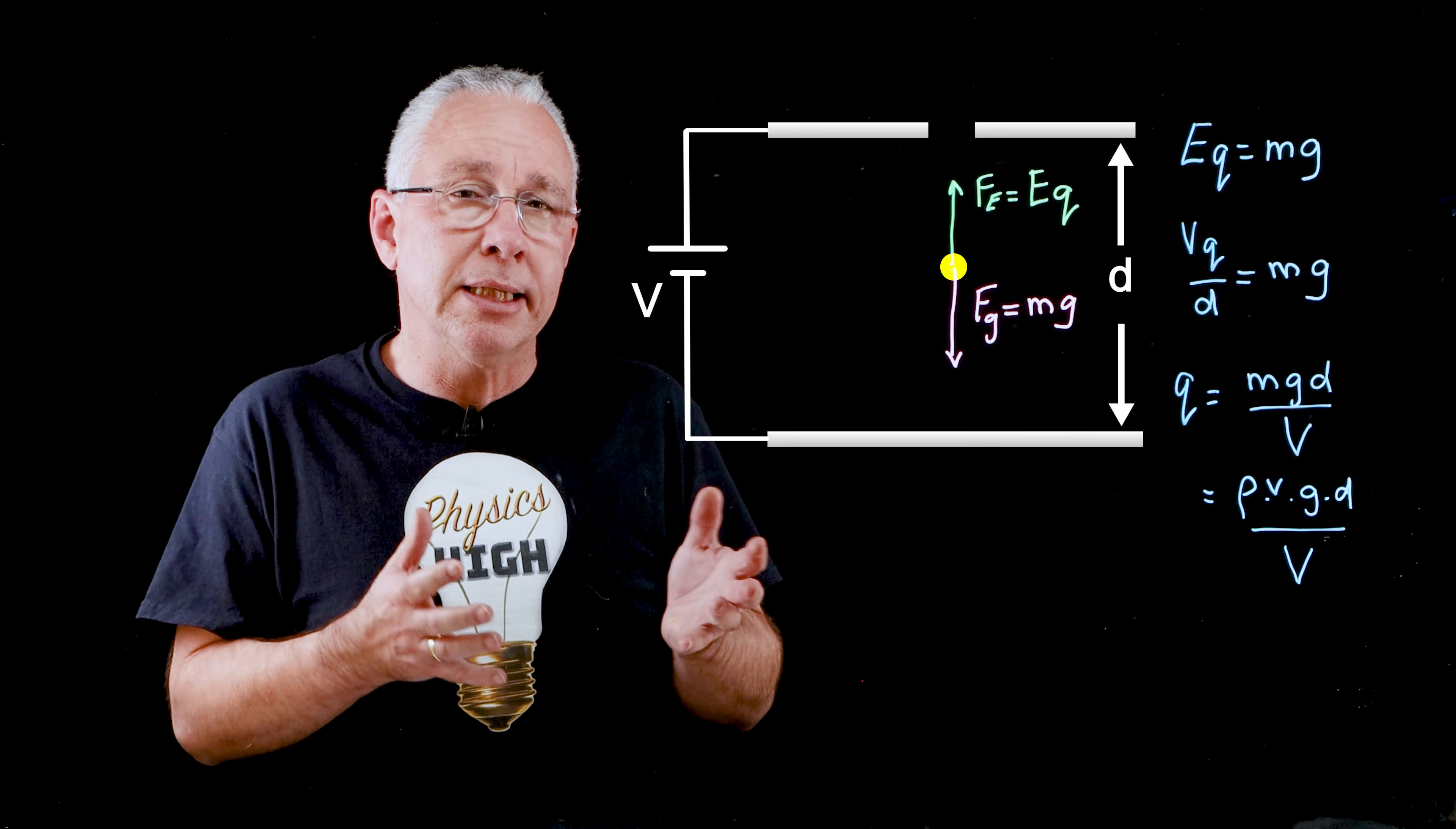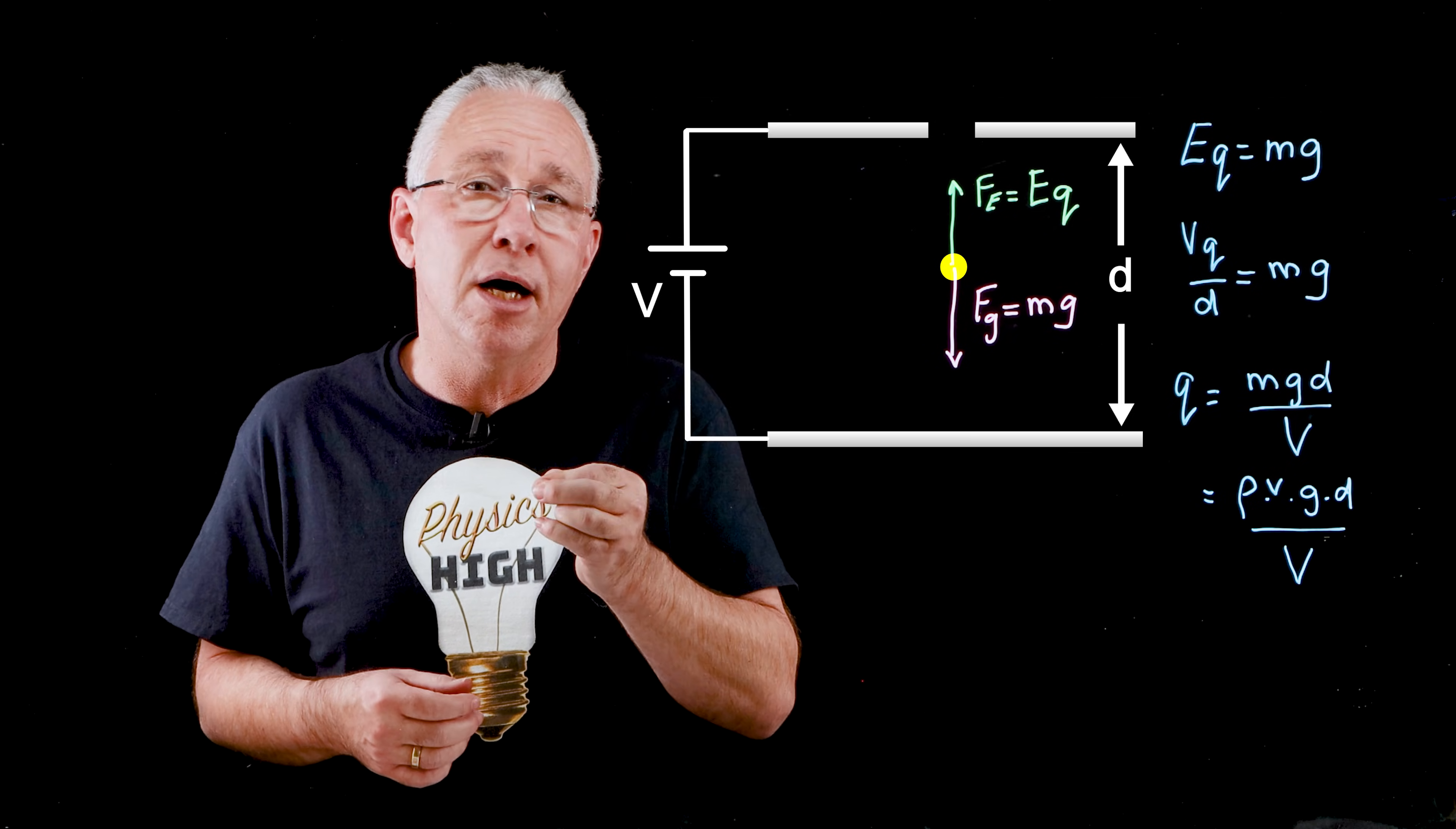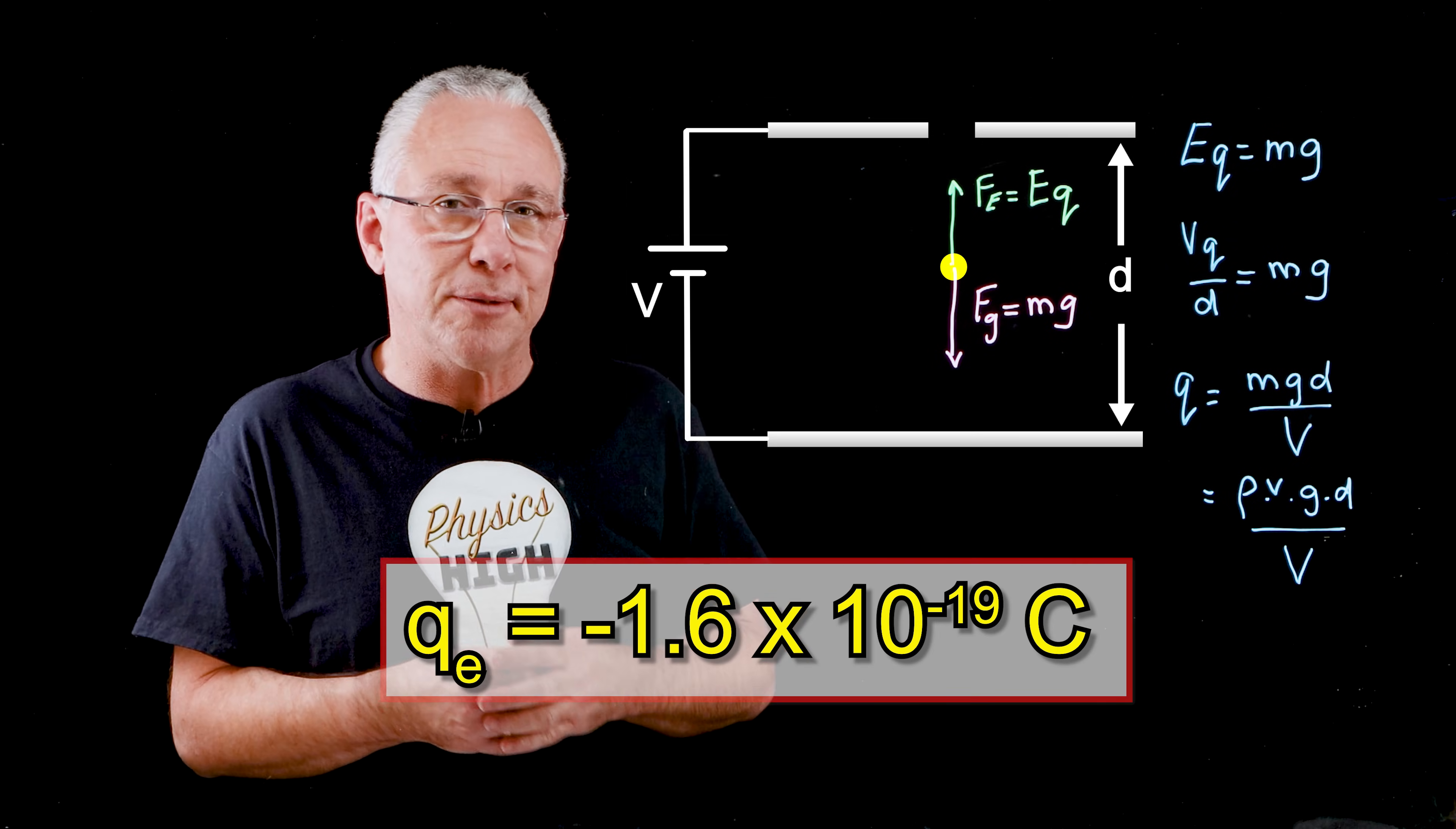Similarly speaking, Robert Millikan, by measuring those charges of many oil drops, noticed that they were all multiples of a particular value. And that value approximates to 1.6 × 10^-19 coulombs. And so he discovered the charge of an electron.